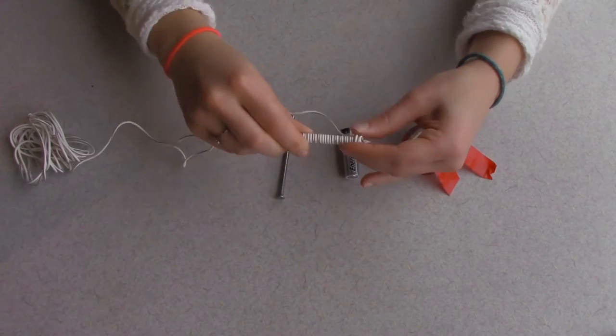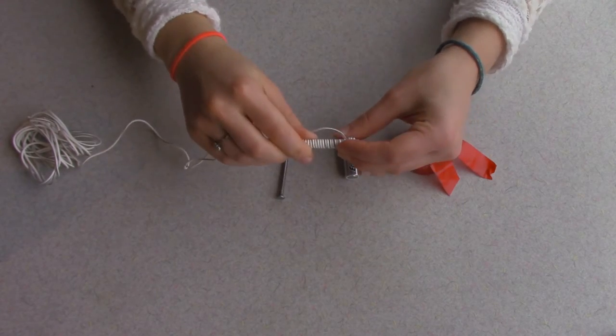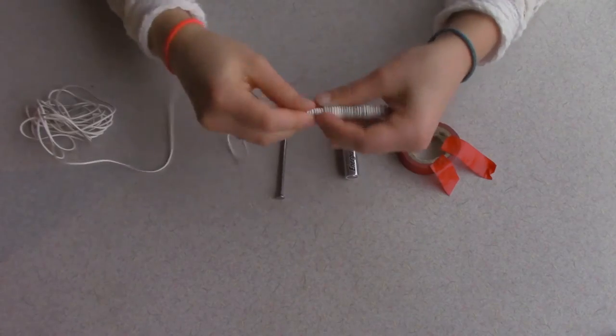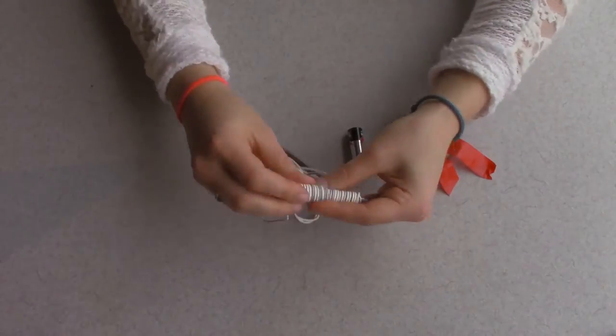Once you get to the end of the nail, start another layer of wire by tightly wrapping the wire in the same direction around the nail, but now moving back towards where you began. Repeat this process until you are confident in the number of coils that surround your nail. Remember, the more coils you have, the stronger your electromagnet will be.